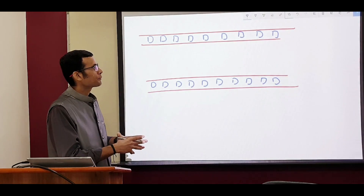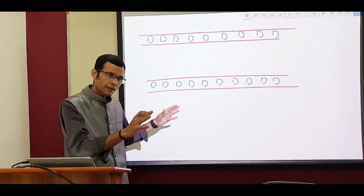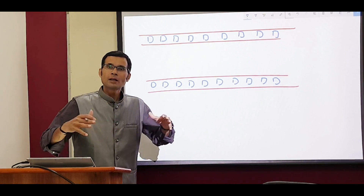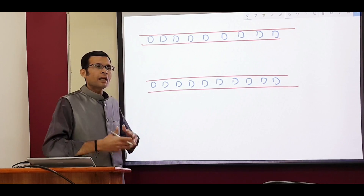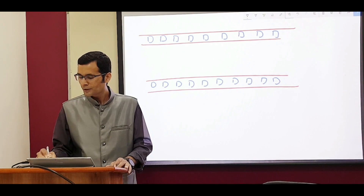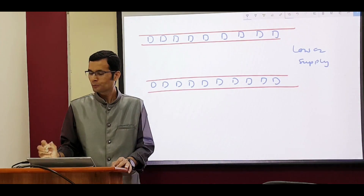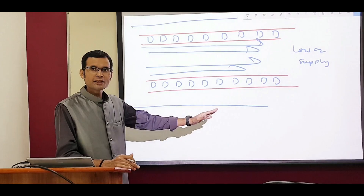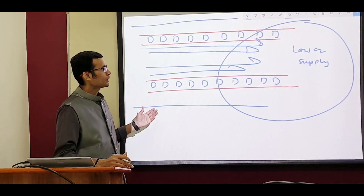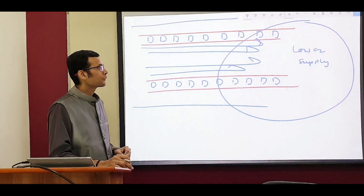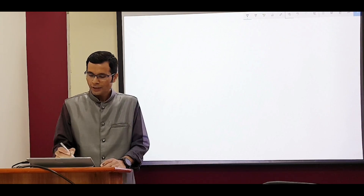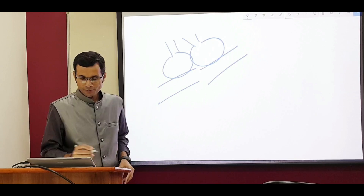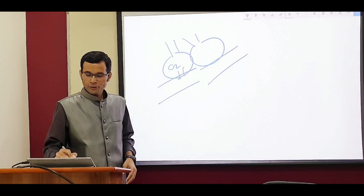Why does hypoxia lead to vasodilation everywhere in the body but vasoconstriction in the pulmonary vasculature? Both effects are beneficial at their respective places. Everywhere in the body, hypoxia means low oxygen supply to a particular tissue, so the vessel dilates so that more blood can be brought to that region and the hypoxia can be corrected. In the pulmonary vessels, the blood supply is basically for gas exchange — oxygen is taken up into the pulmonary blood and carbon dioxide is given out into the alveolus.